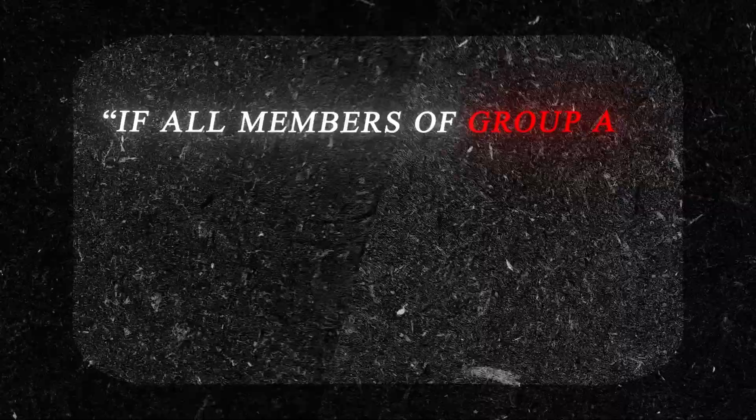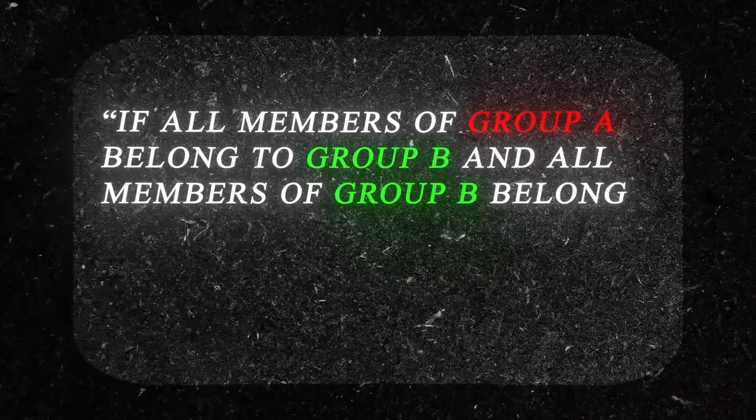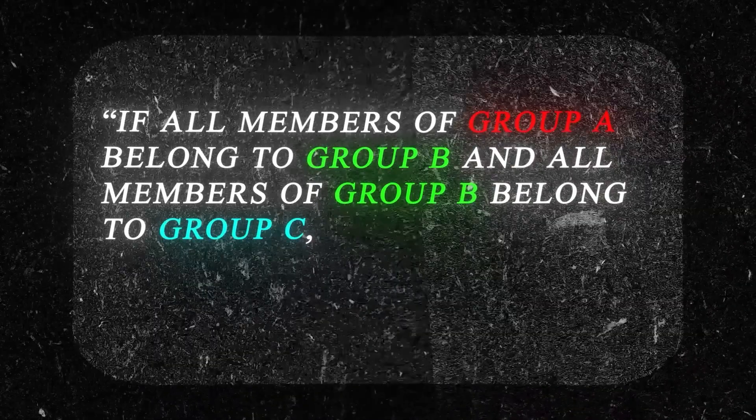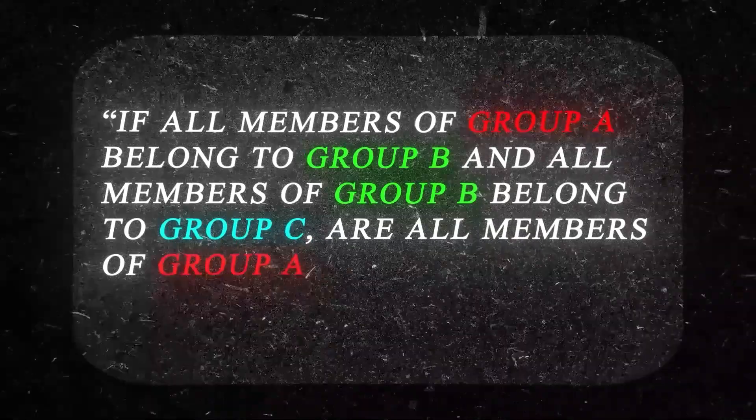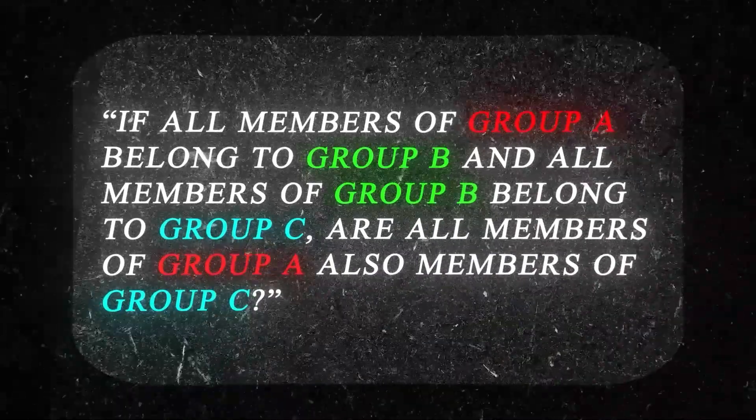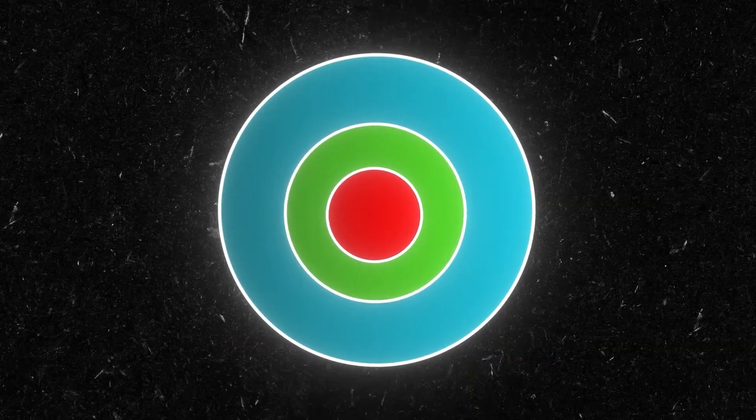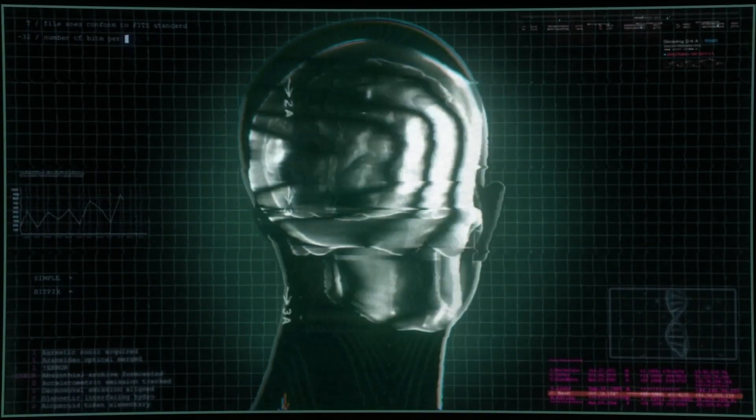Or what about this one? If all members of Group A belong to Group B, and all members of Group B belong to Group C, are all members of Group A also members of Group C? This one is just pure logic. If all A's are B's and all B's are C's, then logically all A's are also C's. These questions may feel easy to you, and perhaps way too easy. This is partially thanks to the Flynn Effect.